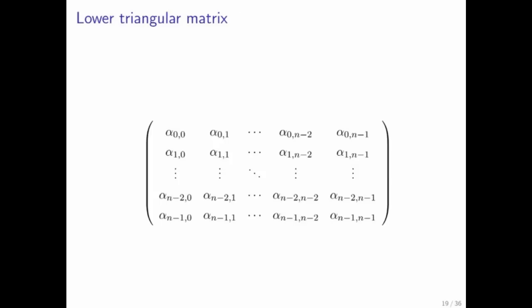Similarly, you can have a lower triangular matrix. The lower triangular matrix has zeros above the diagonal. And we put no restrictions on what's on the diagonal and below it.